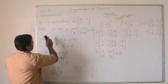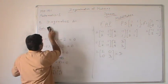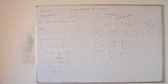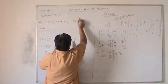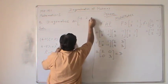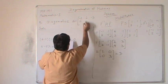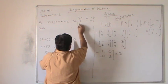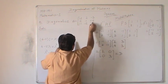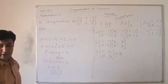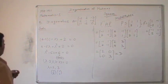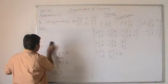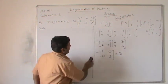Next, I consider a 3×3 matrix example. The given 3×3 matrix A is: [−2, 2, −3; 2, 1, −6; −1, −2, 0]. The question is to diagonalize this square matrix A. First, we need to calculate the eigenvalues.